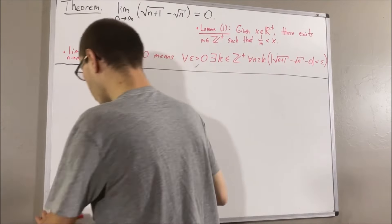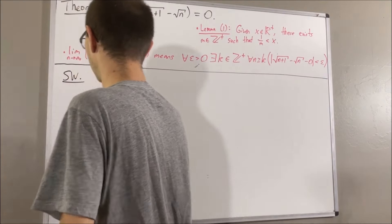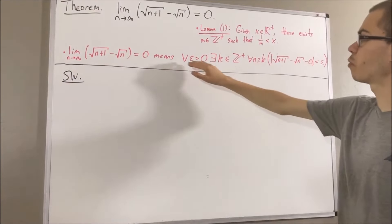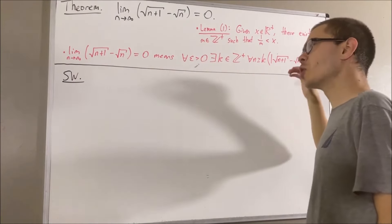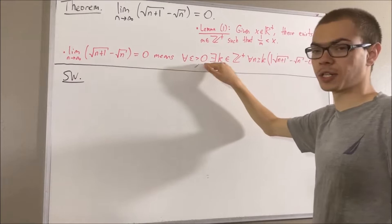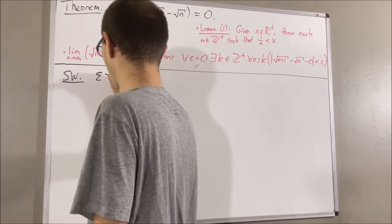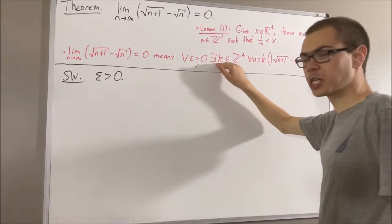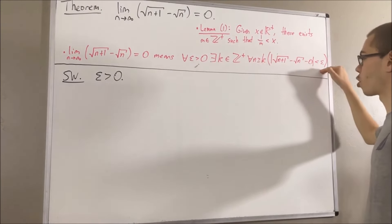Now before we get into the proof, let's start out with some scratch work. In the scratch work, we're trying to outline how we're going to prove this statement. Since we're trying to prove a statement about every epsilon greater than 0, give an arbitrary epsilon greater than 0, and from here we want to find a positive integer k which makes this statement turn out true.